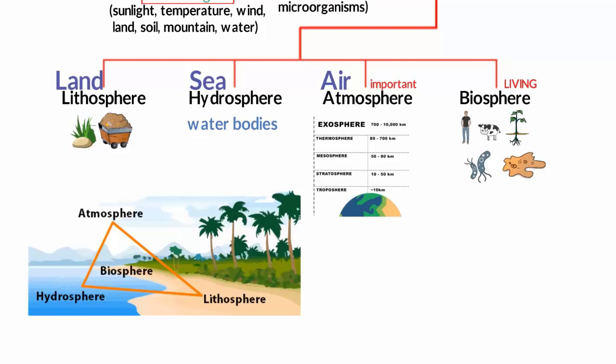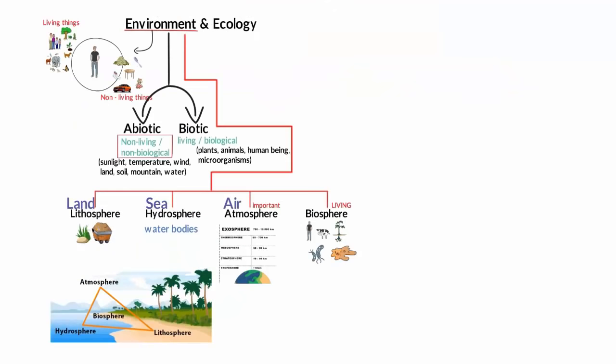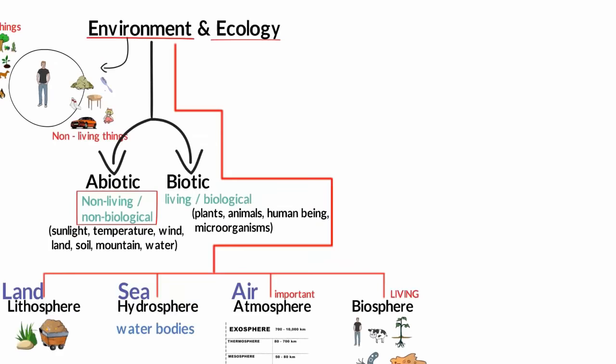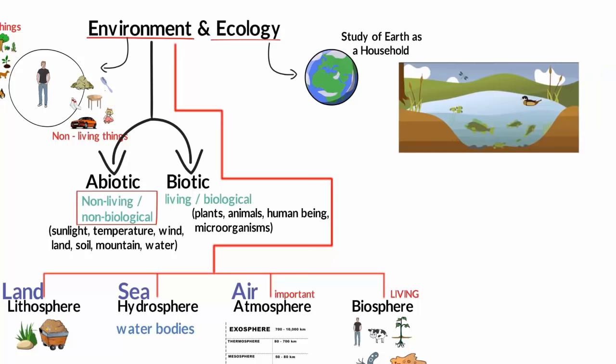Now let's get to know about the ecosystem. Moments back I've told you about the four domains of our environment, which is the lithosphere, the atmosphere, the hydrosphere, and the biosphere. When these four domains coordinate with each other, there is a diversity of life forms on earth. So when we hear the word ecology, ecology is the study of the earth as a household of plants, human beings, animals, and microorganisms.